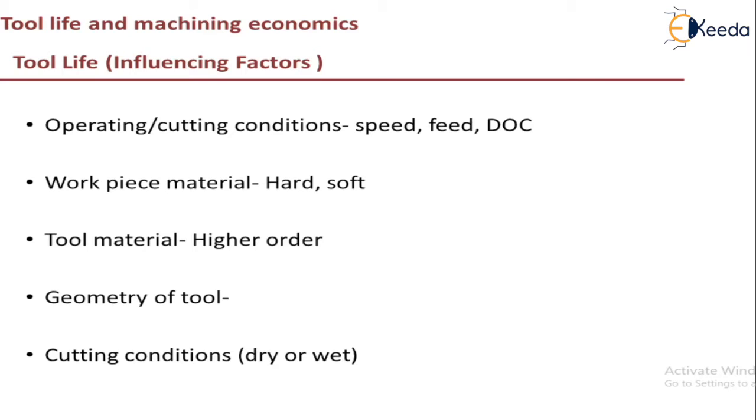And then we have tool material. So if you are going for higher order material like diamond, CBN, then it wears out later, but you will be having a very good tool life. But if you are going for a very low carbon steel or any other cutting tool which is not having a higher order, so then you will be having a very less tool life. Next is the geometry of a tool that we will discuss in detail in our next slide. And then we have cutting conditions that is dry or wet. So if you are using a coolant, the heat is carried away by the coolant and thereby you are reducing the friction and thereby the wear. That is, if you are going for dry conditions, then tool life will decrease.